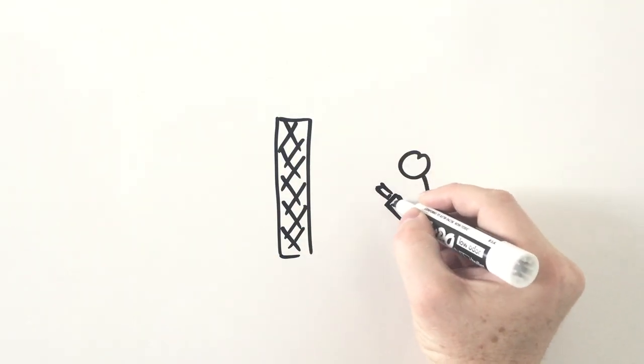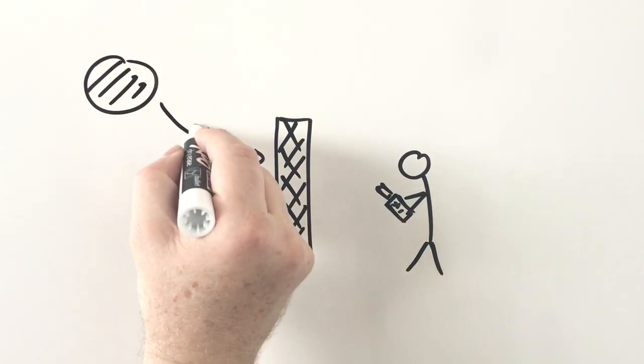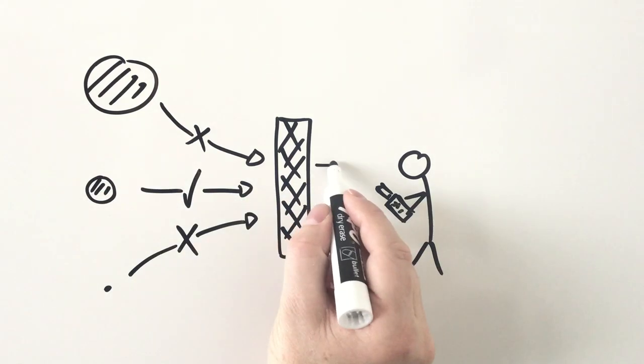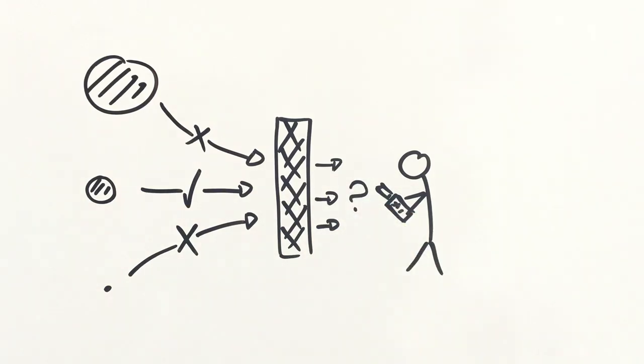This is why when manufacturers design and test air filters, they don't use the largest or smallest particles, but the middle-sized ones—those particles that are just the right size to slip through and make it to the other side.